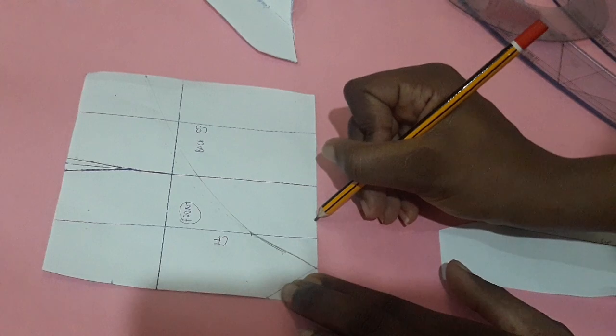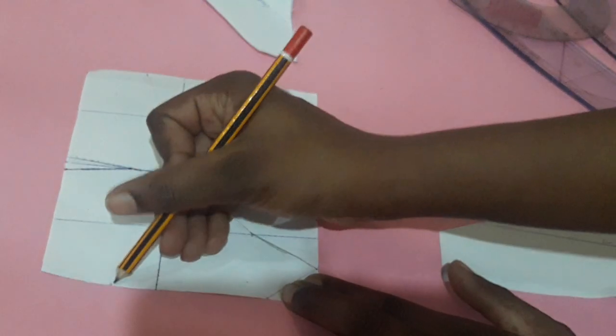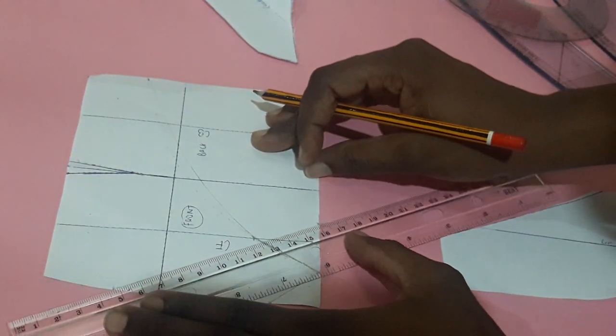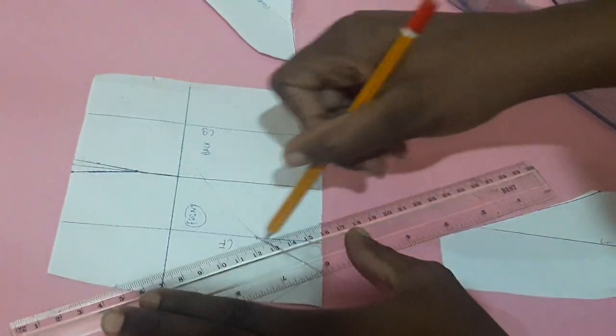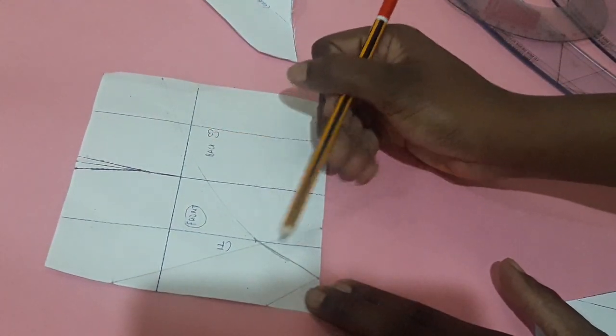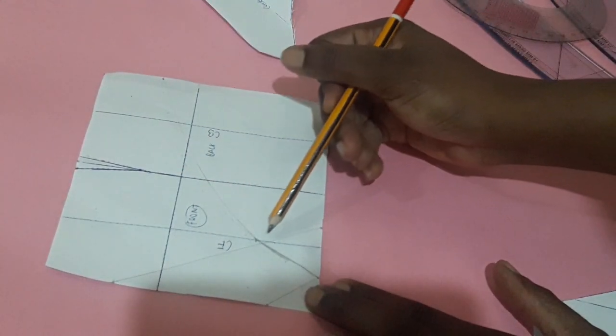Now how do we draft the second part? Look close. If you notice, there's like an extension here. So we're just going to draw a line from here to here. Now, in making wrap skirts you have to be extremely careful because the lines that you draw has a tendency to expose your thighs.